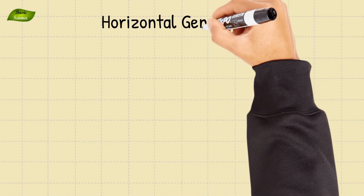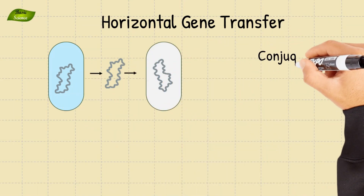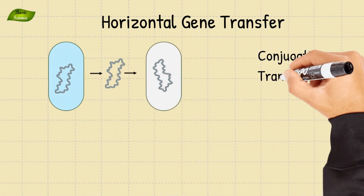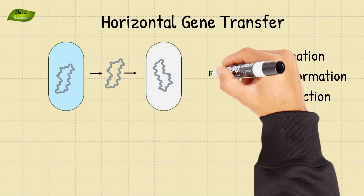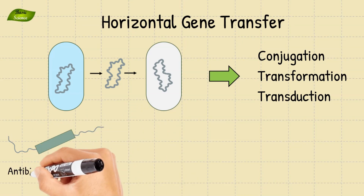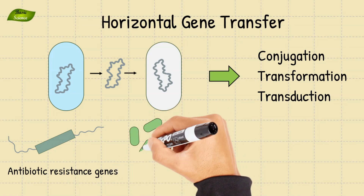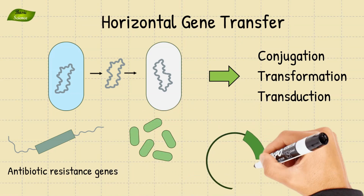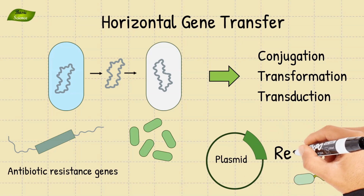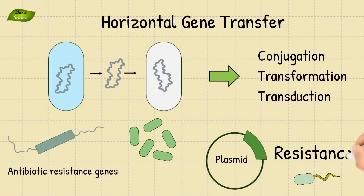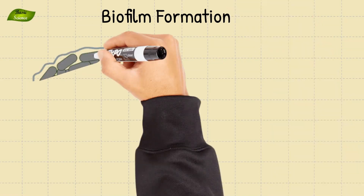Another mechanism is horizontal gene transfer. Bacteria can exchange genetic material horizontally through processes like conjugation, transformation, and transduction. This facilitates the rapid spread of antibiotic resistance genes within the bacterial population. An example includes plasmids carrying antibiotic resistance genes that can be transferred between bacteria, conferring resistance to previously susceptible strains.